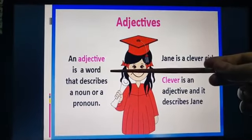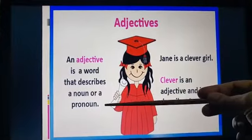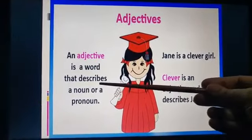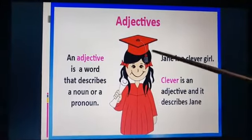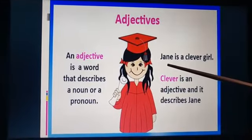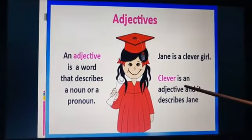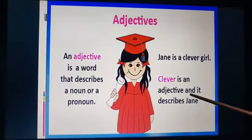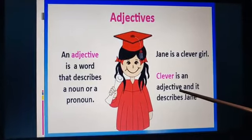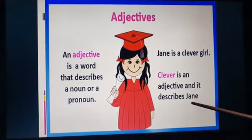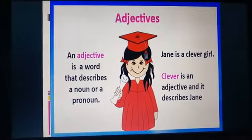An Adjective is a word that describes a noun or a pronoun. It is a describing word. For example, Jane is a clever girl. Clever is an adjective and it describes Jane. Clever is used for Jane, so Jane is a noun and clever is an adjective.